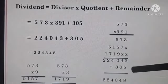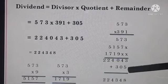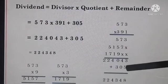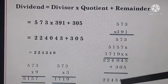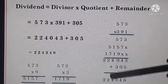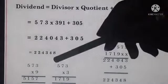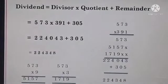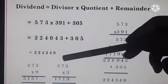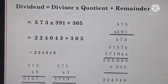Now we will do addition with the remainder. We will add in this product. So 305 is the remainder. 3 plus 5, 8. 4 plus 0, 4. 0 plus 3, 3. 4, 2, 2. So we got our dividend. The answer is 224,348.